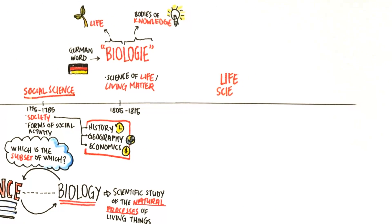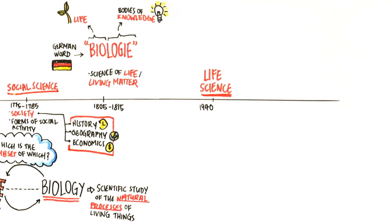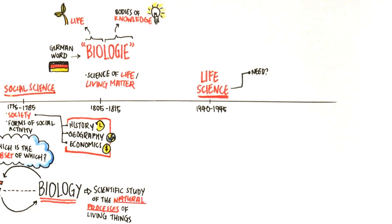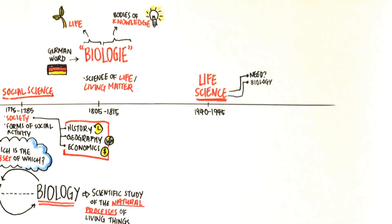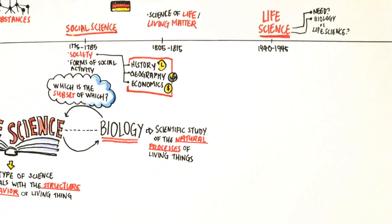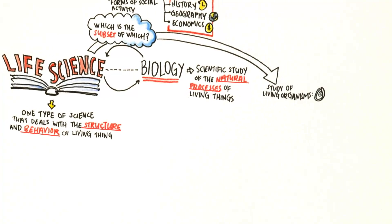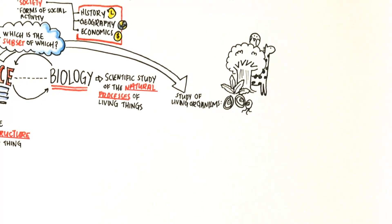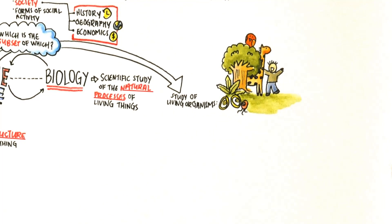The term life science came about much later, in the 1940s. So why was there a need to coin a new term? What is the difference between biology and life science? Just like biology, life science is the study of living organisms — from microorganisms to fungi, plants, animals and humans.